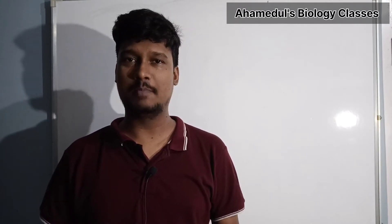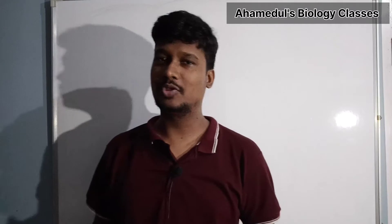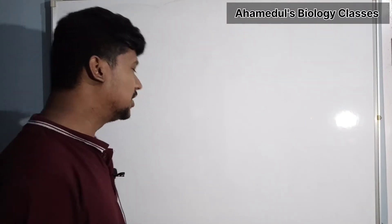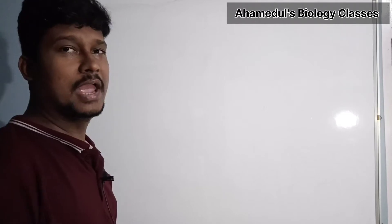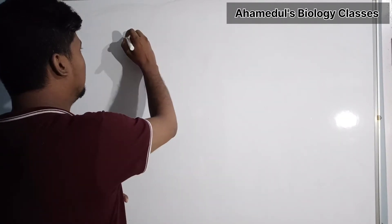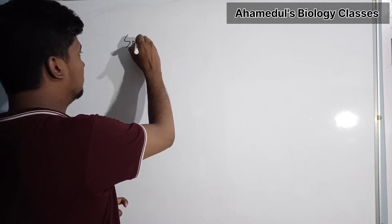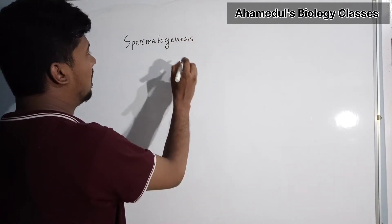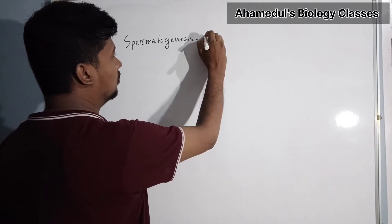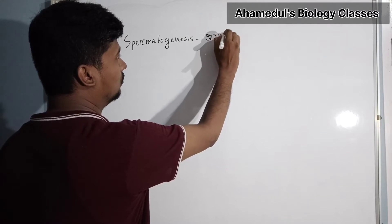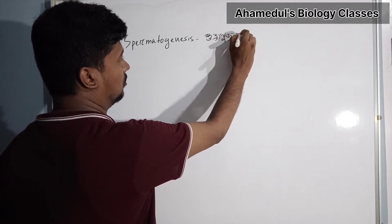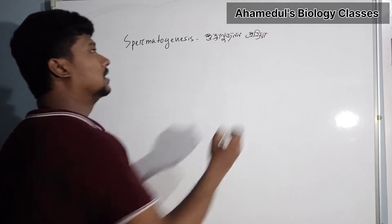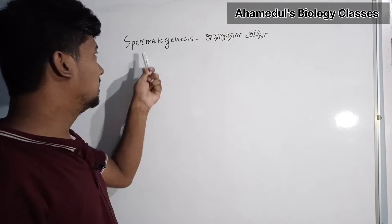I will tell you about this in part 1 and part 2, covering the description and concept. Today we will discuss Human Reproduction, which is Hukranu Zanon Procria — in English, it is called Spermatogenesis. We will discuss the details about Spermatogenesis.